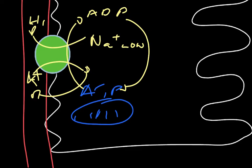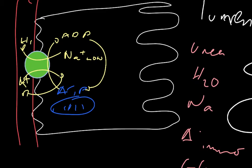Having pumped the sodiums out, we now have a gradient of sodiums wanting to come back in, because the sodium concentration in the lumen is going to be higher than the sodium concentration inside the cell. Remember that the sodium and glucose concentration in the filtrate is the same as in the efferent arteriole, because it's the same plasma in both. So the concentration of glucose and sodium in the lumen equals their concentration in the blood.